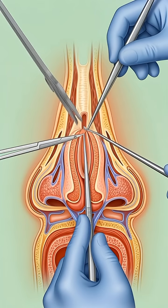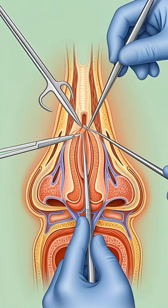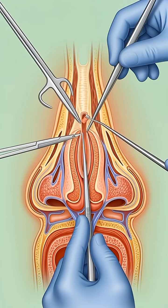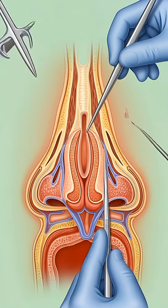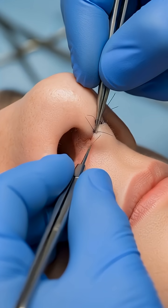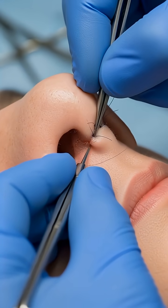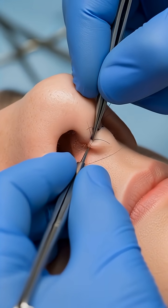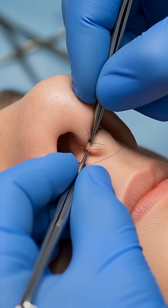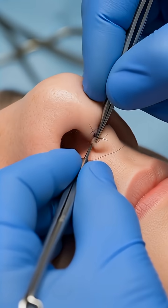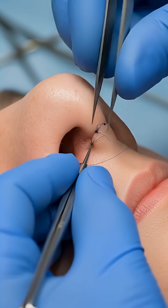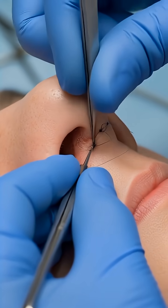If needed, the nasal septum is straightened to improve breathing and airflow. After reshaping, the skin is placed back and the incision is carefully closed with fine sutures.